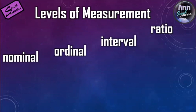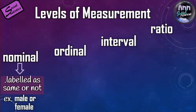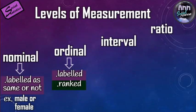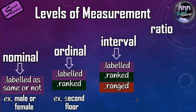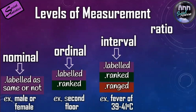Like a stairwell, each level builds on the one below. Nominal labels things as the same or different — like male or female. Ordinal adds the characteristic of rank — like first floor, second floor, third floor. Interval has the characteristics of nominal and ordinal, plus its own characteristic of range. For example, a fever of 39 to 41 degrees centigrade — that is a range — and the values in between, like 40 degrees, are existent and meaningful.